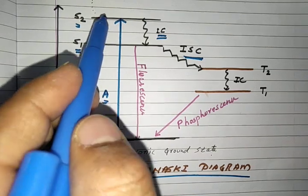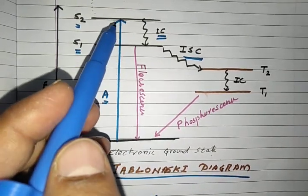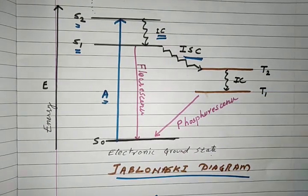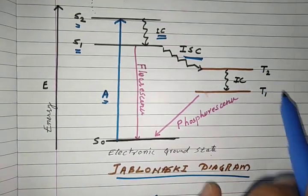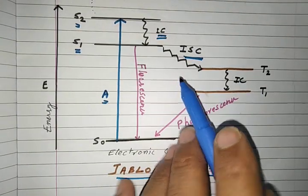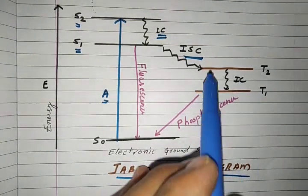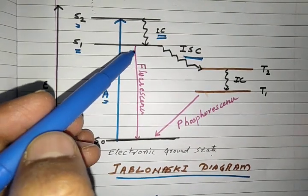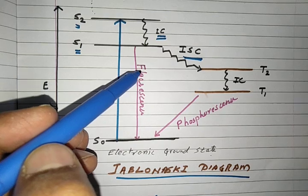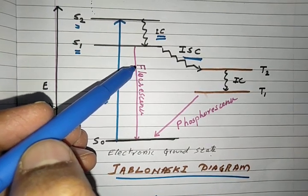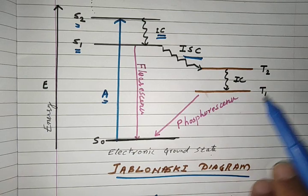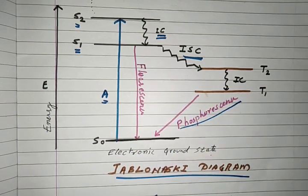This lower-energy state is called the triplet state. Just as we have different singlet energy levels, we also have different triplet energy levels. The triplet state exists because the spin of the electron is changed. We have also seen that if the electron comes down to the ground state and emits light, that is called fluorescence, and if the electron comes from the triplet state to the ground state, that is called phosphorescence.